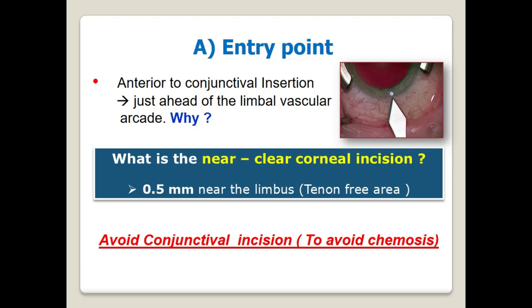Where should the entry point be? The entry point should be just anterior to the conjunctival insertion, in front of the limbal vascular arcade. Keep it as peripheral as possible. Being near the vascularized limbus, the wound heals rapidly.